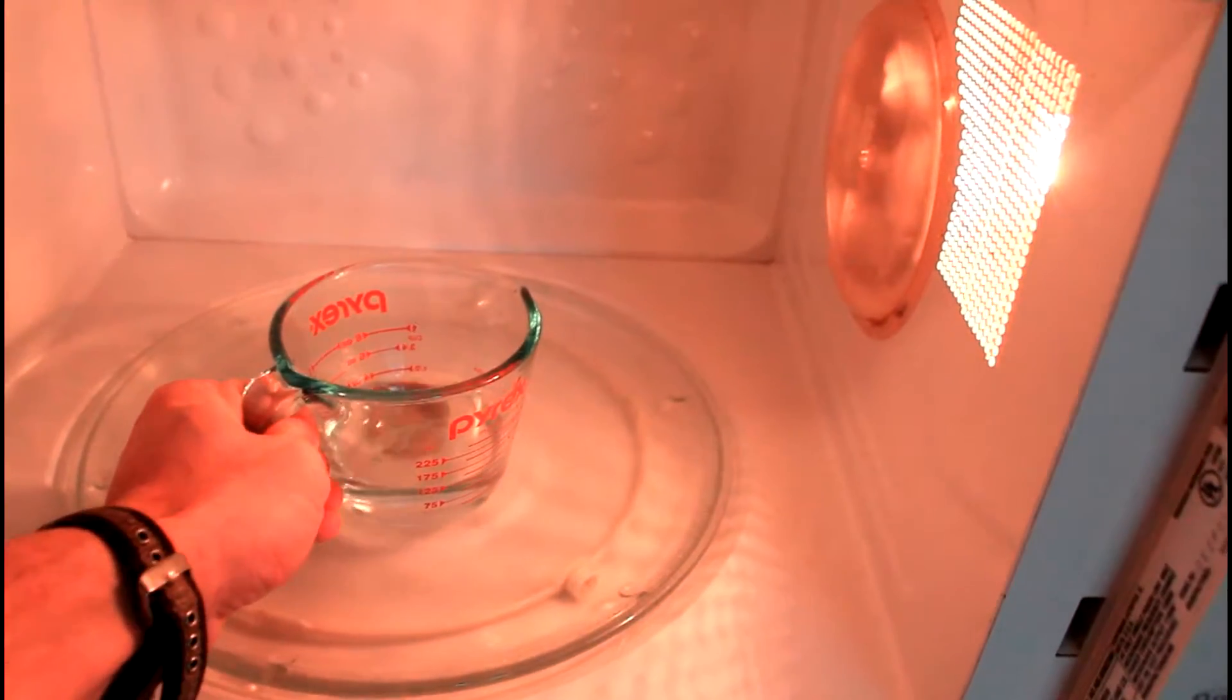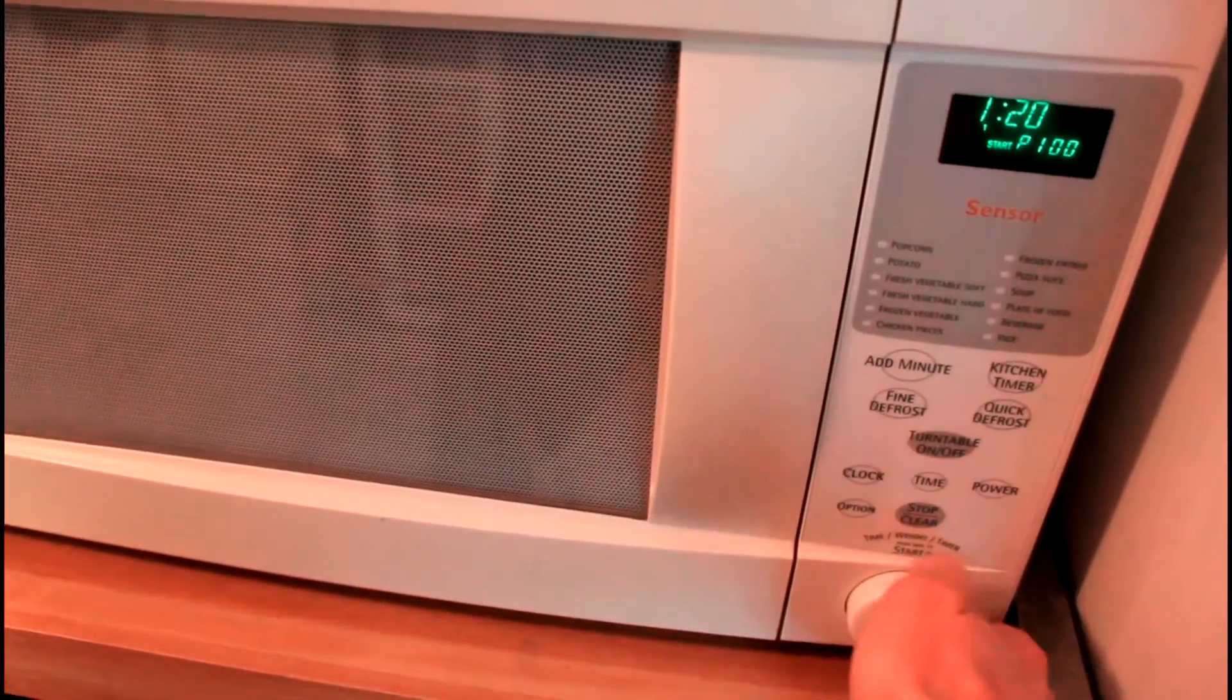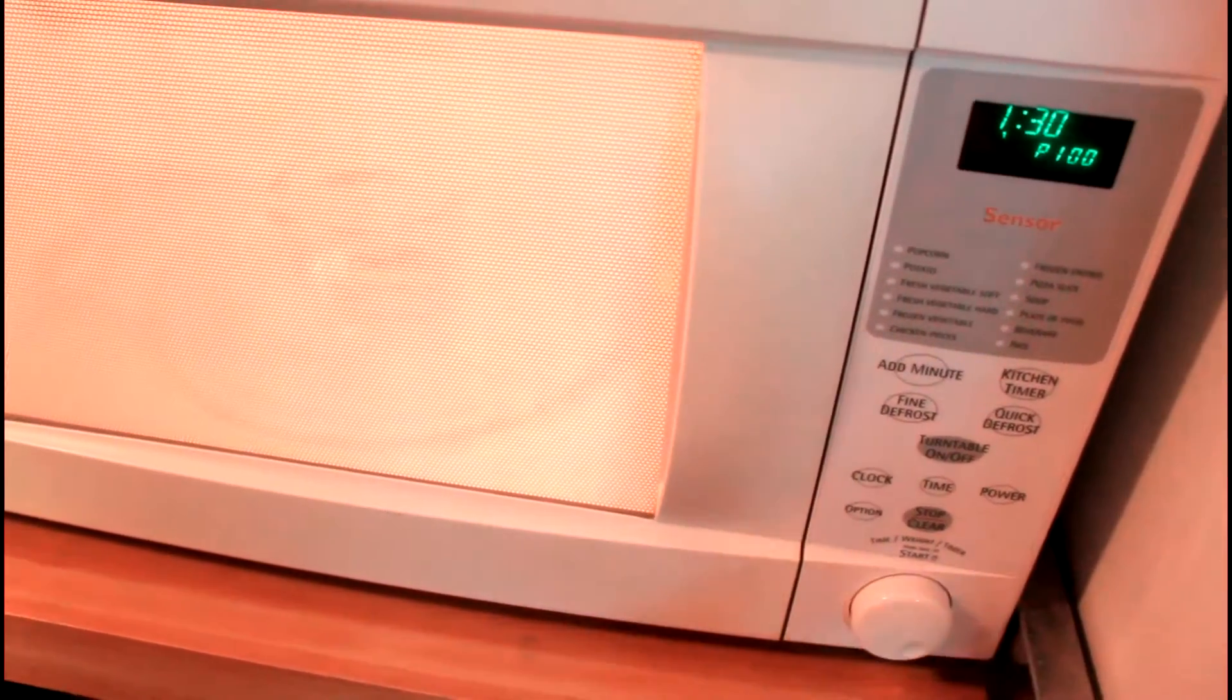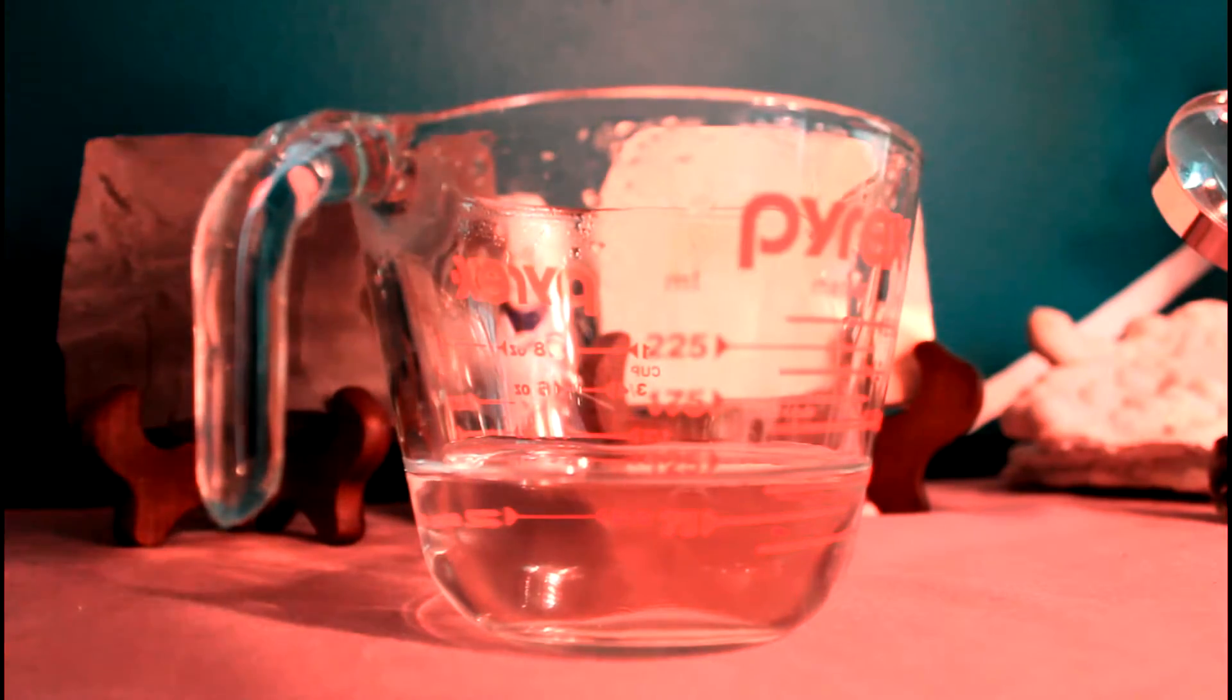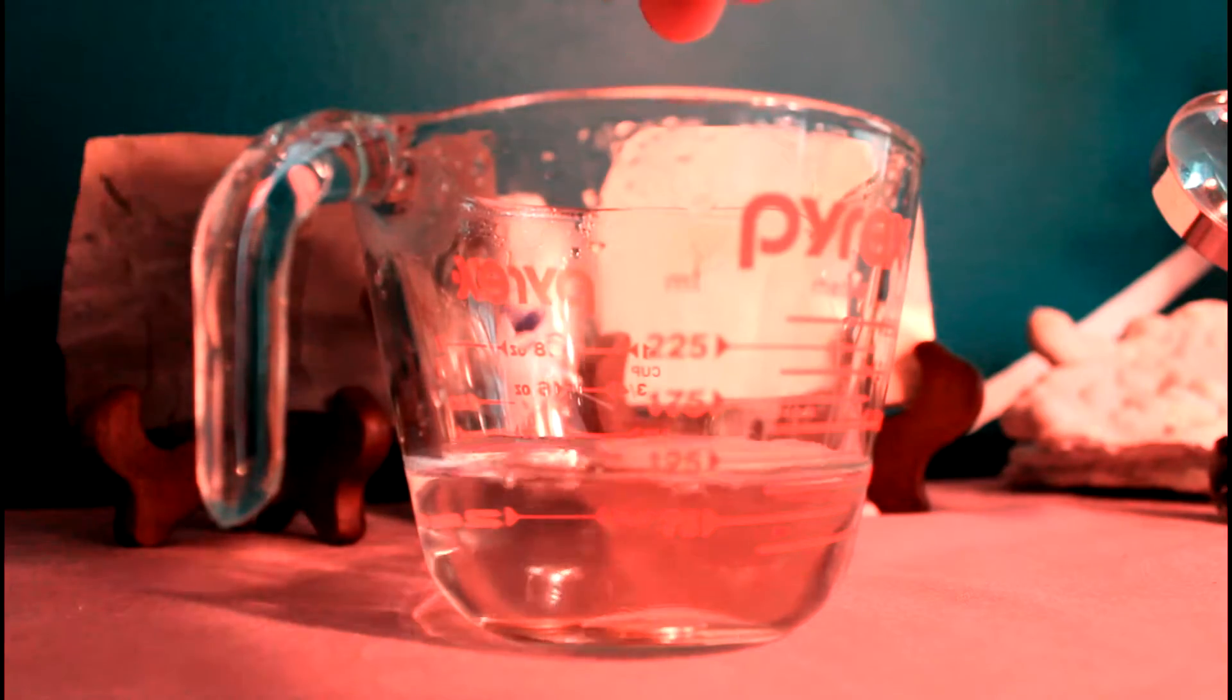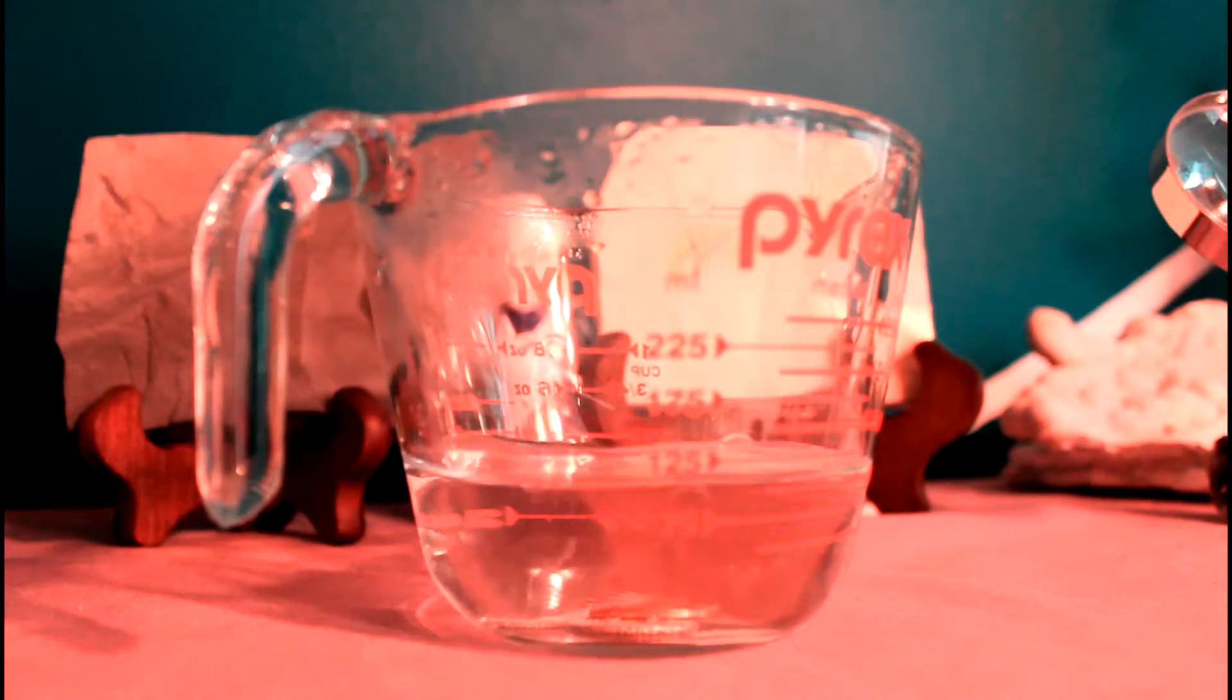Next, we're going to heat this up. Microwaves are different, and you might be using a different volume than I, but I need about a minute 30 to get it hot enough. Once you see it boiling, that's when you know it's hot enough to do the reaction. Take it out, careful it's hot, and then place anywhere from about 5 to 10 pennies in there. And then try to observe any reactions that you're going to get.